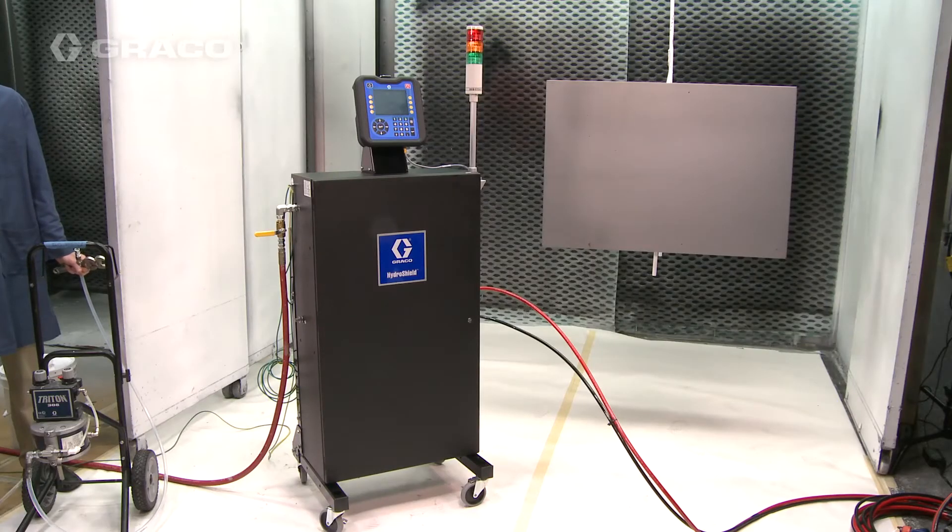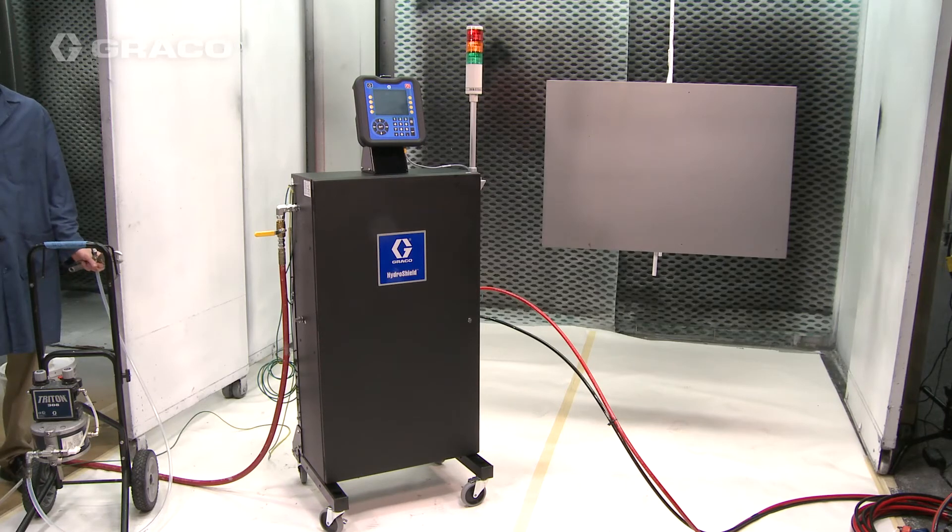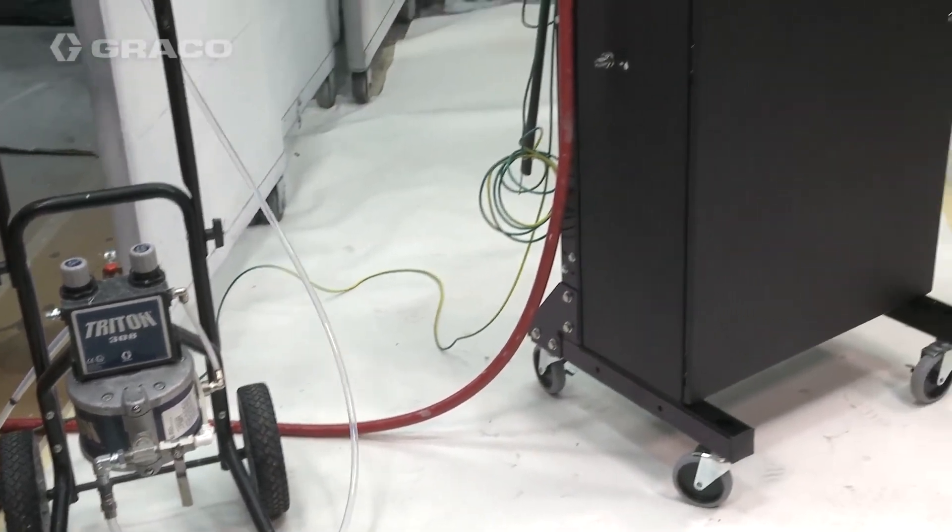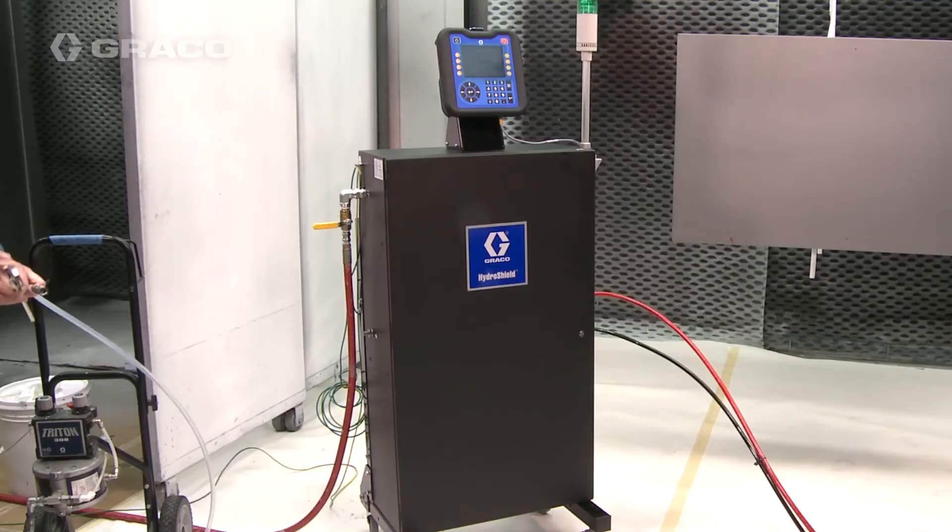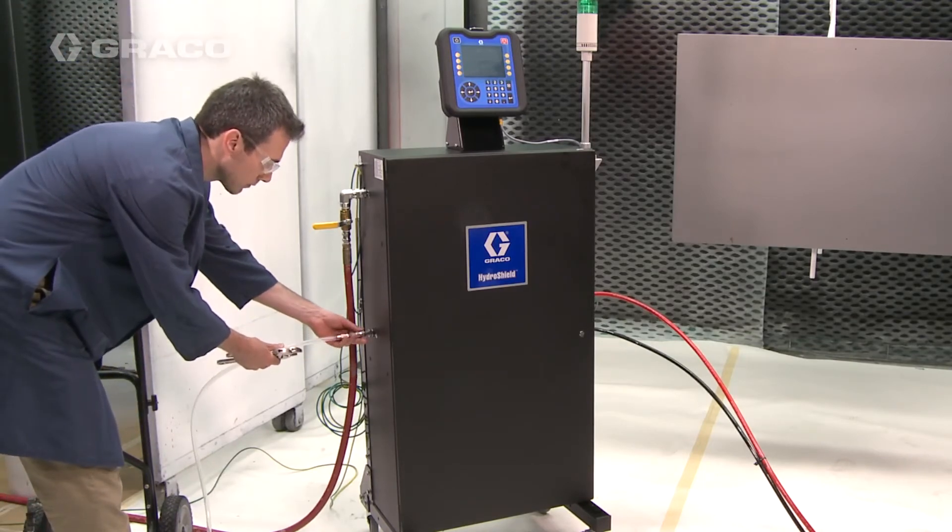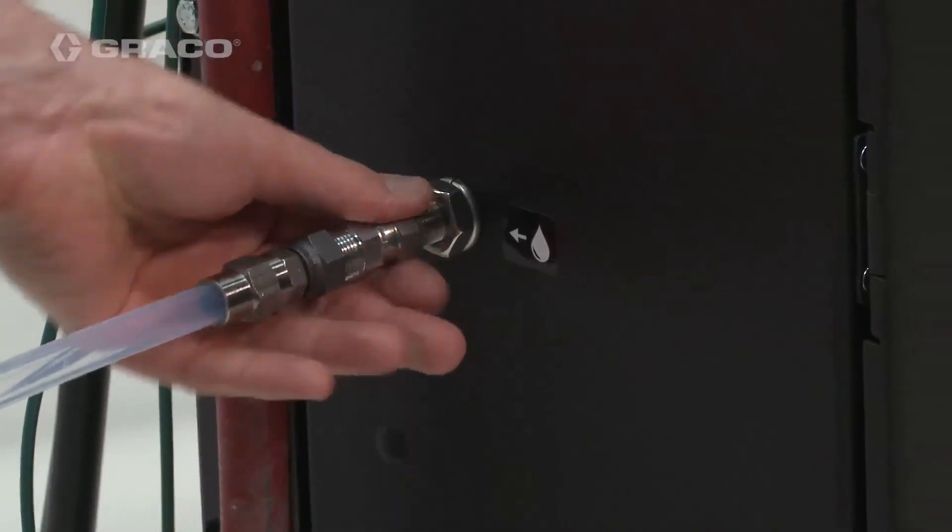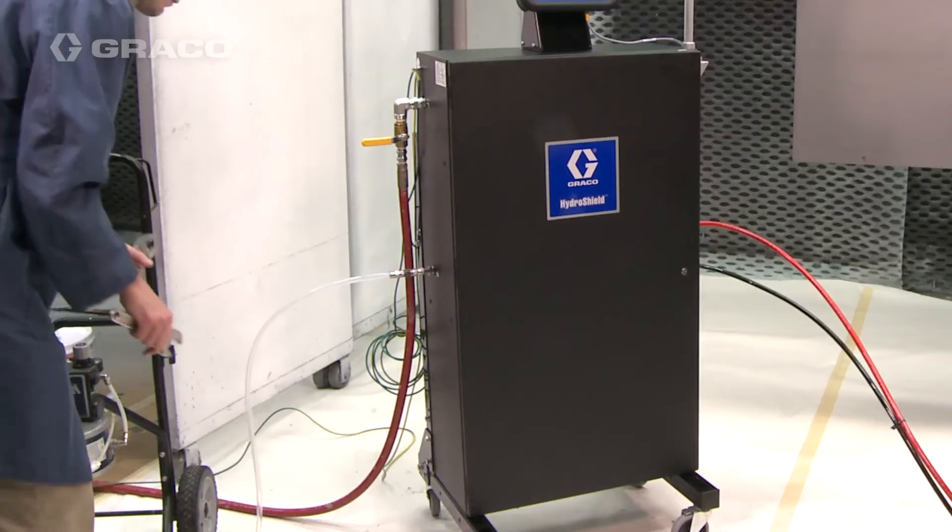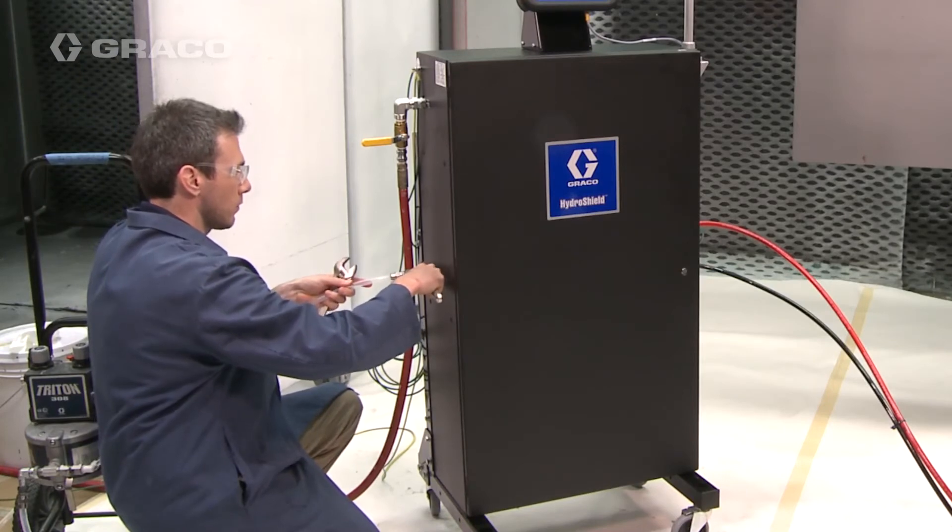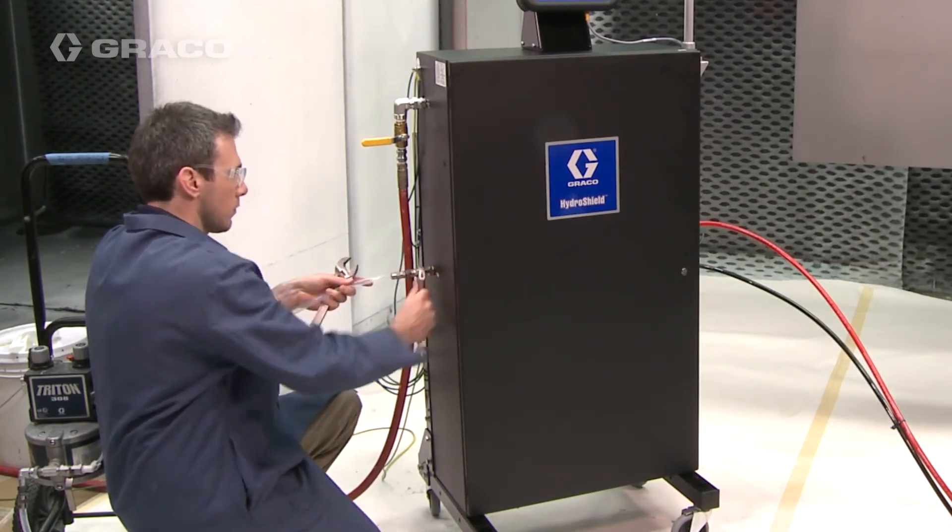Connect the fluid supply hose between the fluid supply and the fluid inlet on the isolation cabinet. We're using a Triton pump to supply fluid to the cabinet today. The maximum inlet pressure is 100 psi. If your supply has a higher pressure because of thicker material or because it's coming from a circulation system, regulate the pressure to 100 psi at the inlet of the cabinet.